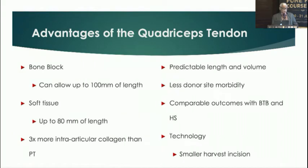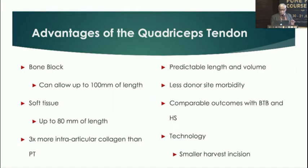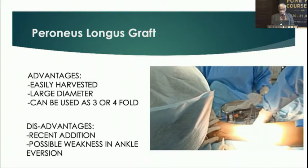The quadriceps tendon has been in use for some time. You can vary the length — with a bone block it can reach 10 centimetres; with soft tissue only, about 8 centimetres. It has three times more intra-articular collagen than the patellar tendon, a predictable length and volume, and low donor-side morbidity with modern minimally invasive techniques. Outcomes are comparable with both bone patellar tendon and hamstrings, and with current technology it can be harvested through much smaller incisions.